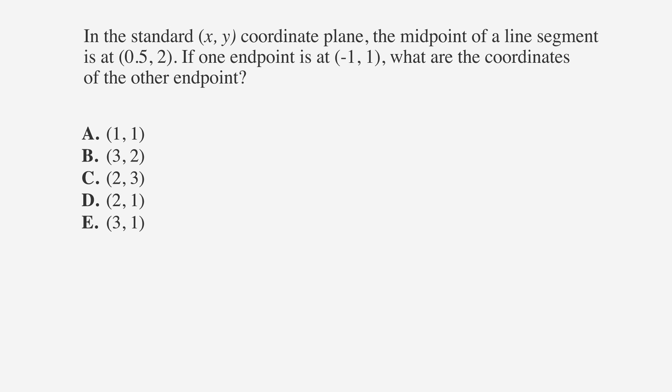In the standard xy coordinate plane, the midpoint of a line segment is at point five comma two. If one endpoint is at negative one comma one, what are the coordinates of the other endpoint?